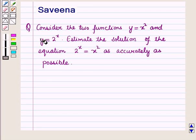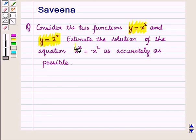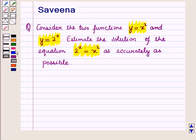Hello and welcome to the session. In this session we will discuss a question which says to continue the two functions y is equal to x square and y is equal to 2 raised to power x, as to find the solution of the equation 2 raised to power x is equal to x square as accurately as possible. Now let us start with the solution of the given question.